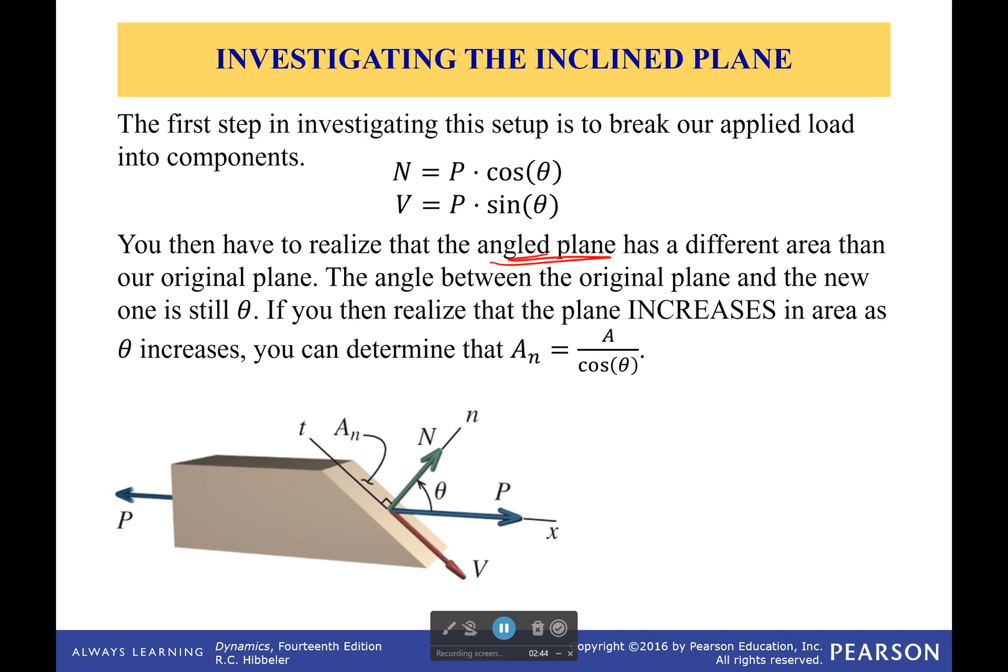Now, what I said earlier was that the angled plane has a different area than our original plane. You need to remember that. You also need to remember that the angled plane increases in area as our angle gets bigger. It makes sense. As we get further and further along here, that line gets longer and longer, while the thickness stays the same. And so, obviously, the area is getting bigger. So, if you were just trying to guess this or figure out an equation for it, well, you would realize soon that it had to be cosine theta.